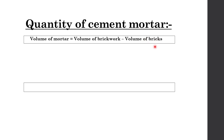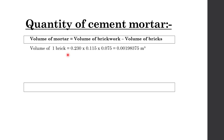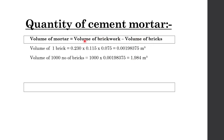We know the volume of brickwork, that is 2.55 cubic meter. Let's calculate the volume of bricks. Volume of one brick equals 0.230 multiplied by 0.115 multiplied by 0.075, which equals 0.00198375 cubic meter. We have a thousand number of bricks, so to get the volume of a thousand bricks, we multiply by 1000, giving 1.984 cubic meter. Now, volume of mortar equals 2.55 minus 1.984, which equals 0.566 cubic meter.